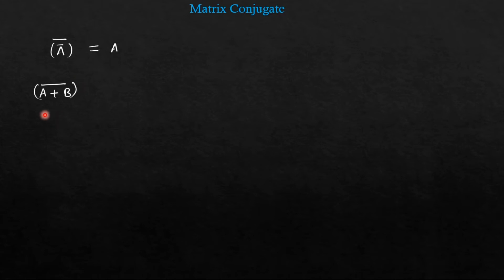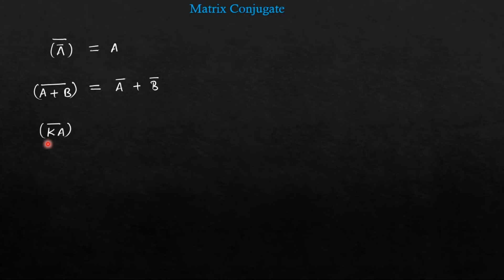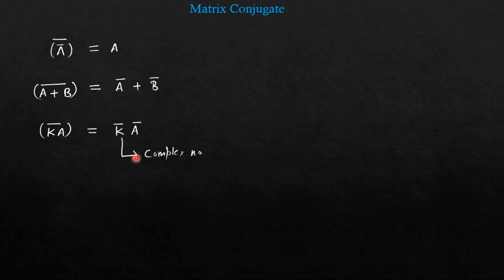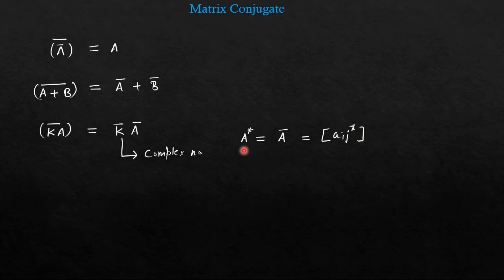Similarly, if you take the conjugate of the sum of two matrices, you will get A bar plus B bar — that is the sum of the conjugates. Similarly, if I am taking the conjugate of a scalar multiplication with a matrix, you will get K conjugate into A conjugate. If K is a complex number, you will have to take the conjugate; if it is real, there will be no sign change. And remember, A conjugate equals A bar, which is also equal to Aij conjugate. A bar and A star both represent the conjugate.